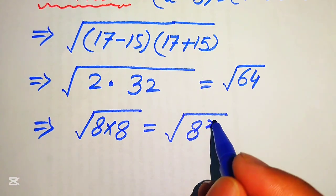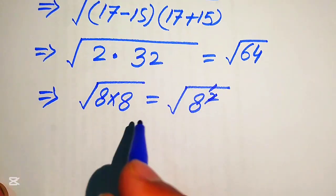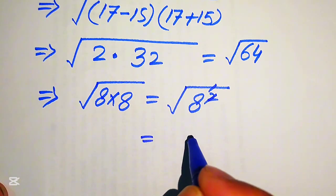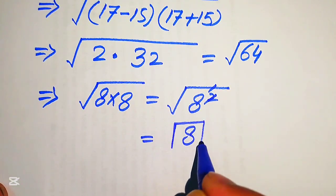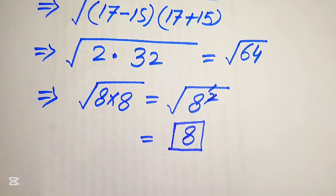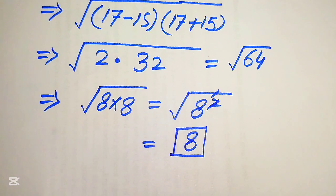The square and the square root cancel out, and we are left with 8 only. This 8 is the final simplified form of the given algebraic expression, and it is the final answer obtained from method one.